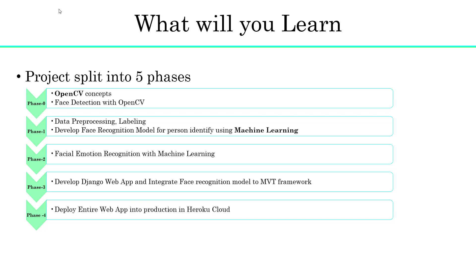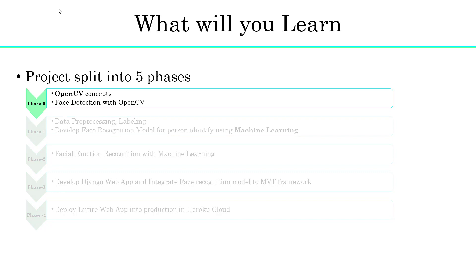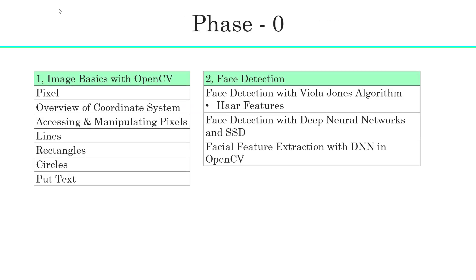The first phase is Phase 0. In this phase, I will teach you the prerequisites required for this course — Image Basics with OpenCV and Python, and Face Detection using the Viola-Jones Algorithm and Deep Neural Networks. In Image Basics, I will cover some fundamental mathematical concepts on images and how to work with OpenCV and Python. Then I will extend Image Basics to face detection using the Viola-Jones Algorithm and Deep Neural Networks.